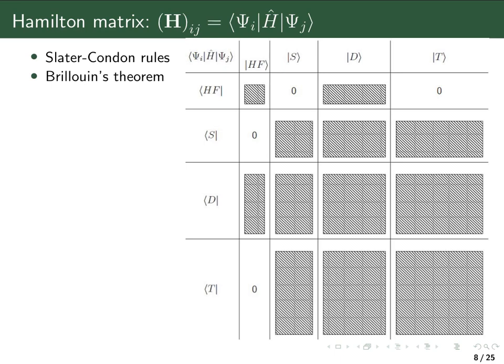We will have one element where we have the Hartree-Fock determinant in both the bra and the ket. Then several elements where the Hartree-Fock is in the bra and all single-excited determinants are in the ket, and many more where double-excited determinants are in the ket, and even more for triples and so forth. Similarly, we can place single-excited, double-excited, and triple-excited determinants in the bra as well, giving us this huge matrix. We can now use the Slater-Condon rules to evaluate these matrix elements over the Hamiltonian.